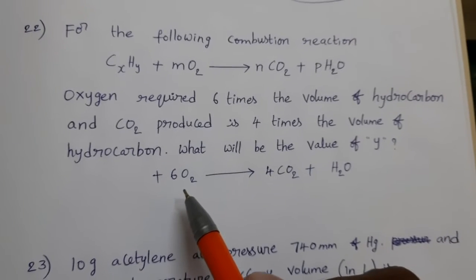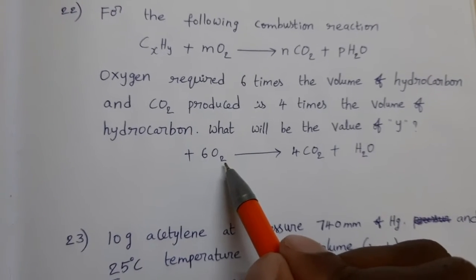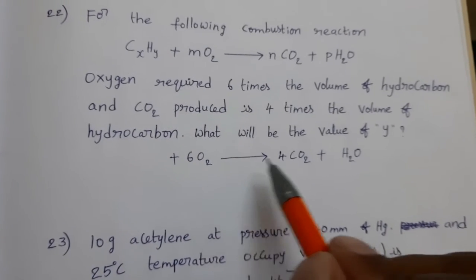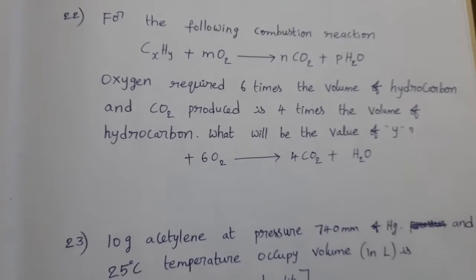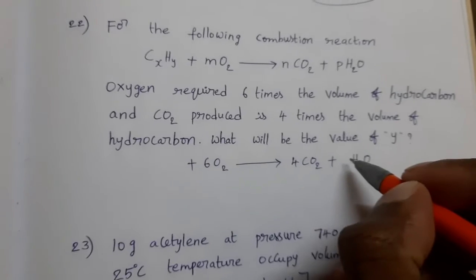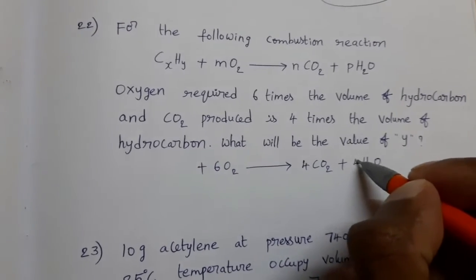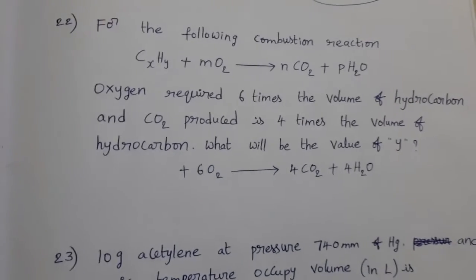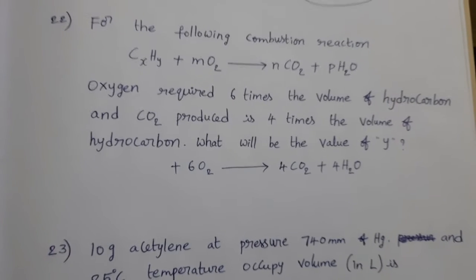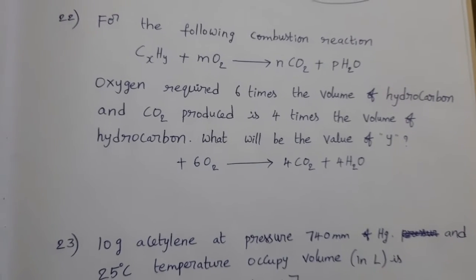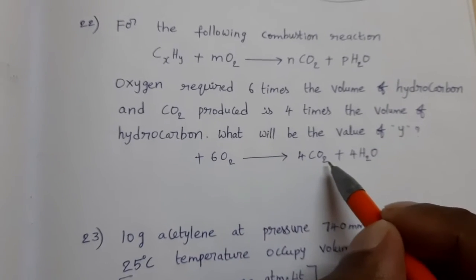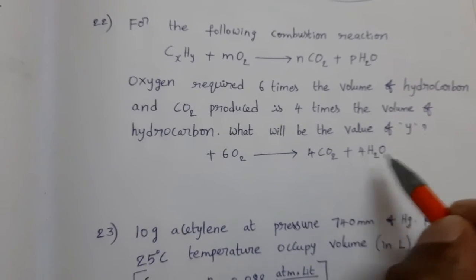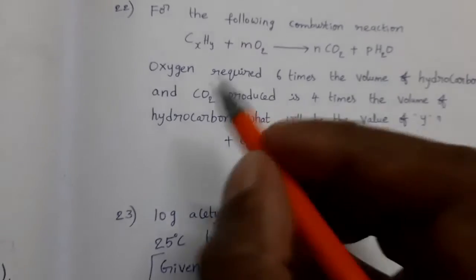Reactant side, how much amount of oxygen? 6 into 2, 12 atoms. Here, 4 into 2, 8. How many oxygen atoms are required? 4. Reactant side, 12 oxygen atoms are there. Product side, 4 into 2, 8 plus 4, 12 oxygen atoms balanced.